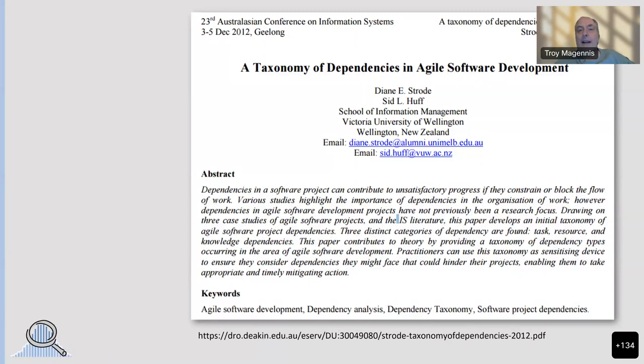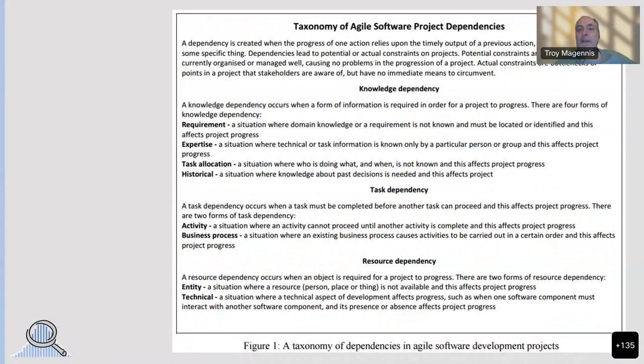I didn't invent this — I took it from Diane Strode and Sid Harp, who wrote a paper in 2012 where they named the types of dependencies hit in agile software development. There's a link to the original PDF in the slides. It comes down to three different types: knowledge dependencies, task dependencies, and resource dependencies — which match roughly what I said earlier about needing something, needing someone, and needing to learn something.